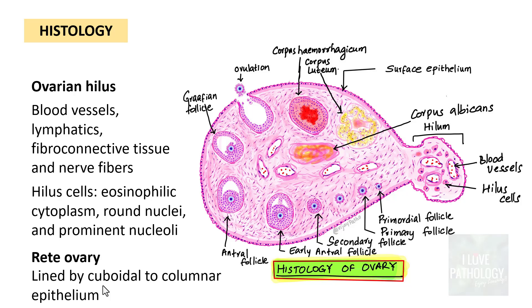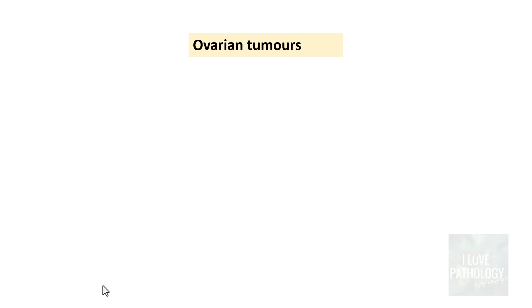To summarize, the histology of the ovary is composed of the ovarian surface epithelium, the ovarian cortex, the ovarian medulla, and the hilum with the rete ovary. Moving on to ovarian tumors — these can be of various types: benign, borderline, and malignant.